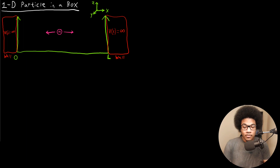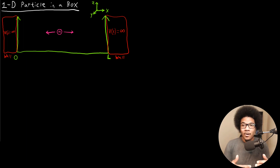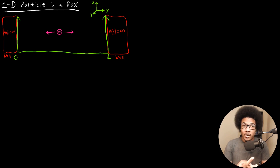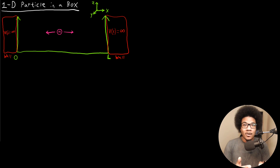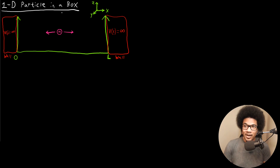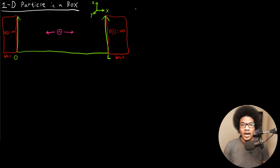The most useful starting points and foundation are the foundational types of motion that particles can undergo: translational motion, vibrational motion, and rotational motion. We'll have a different quantum system and quantum problem to solve for each of those types of motion, and for translational motion, the simplest non-trivial example is the one-dimensional particle-in-a-box.